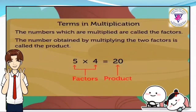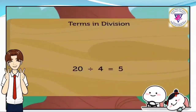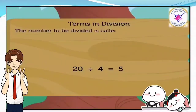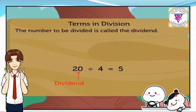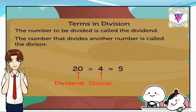Now look at the division example: 20 divided by 4 is equal to 5. The number to be divided is called the dividend — here, 20 is the dividend. The number that divides another number is called the divisor. The divisor here is 4.